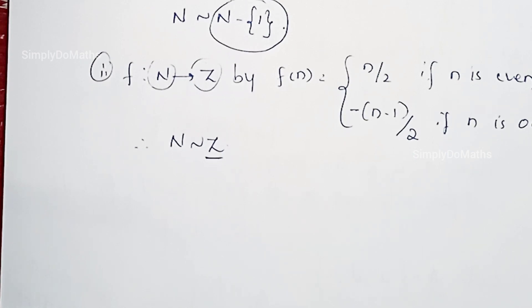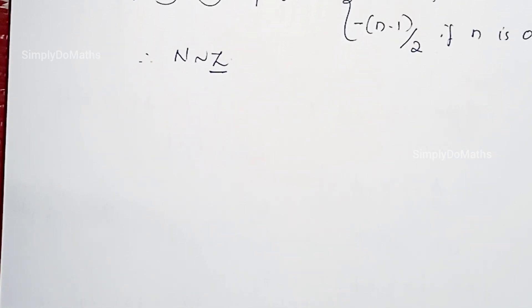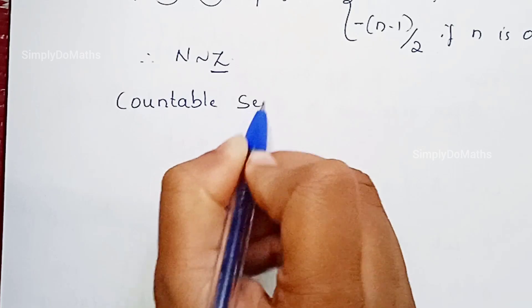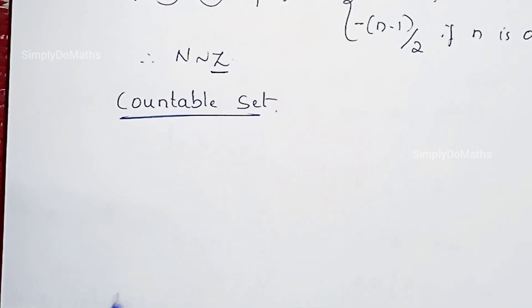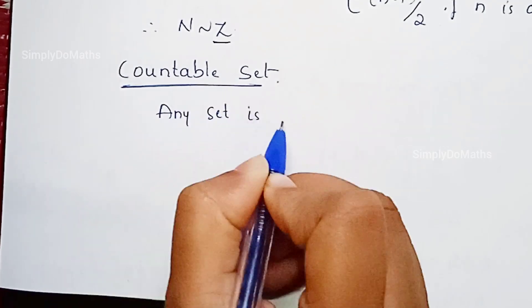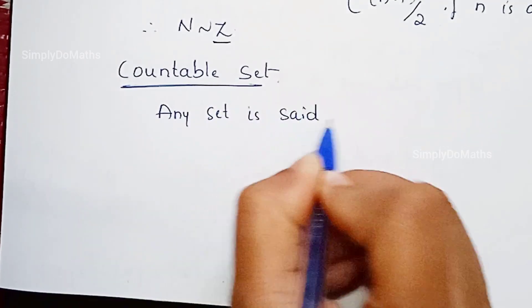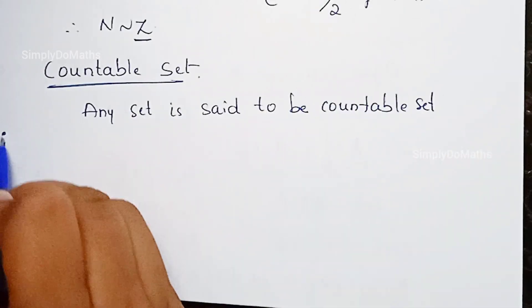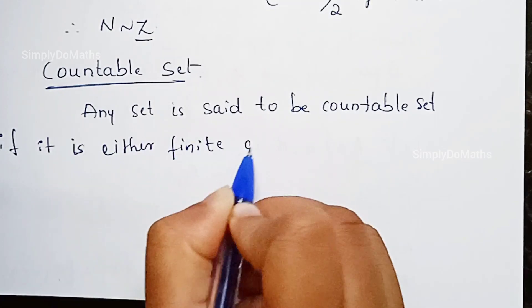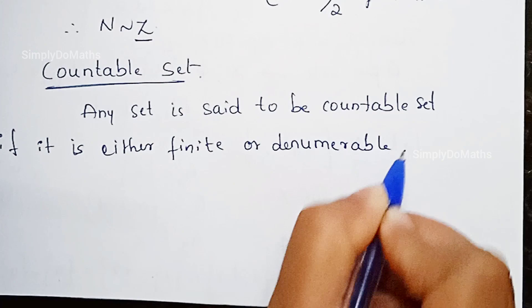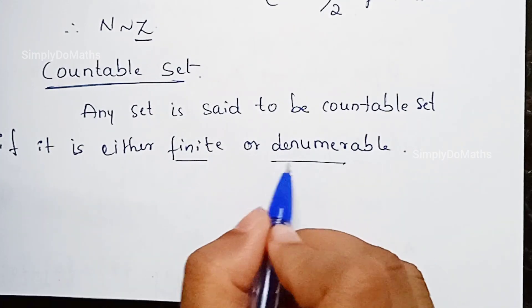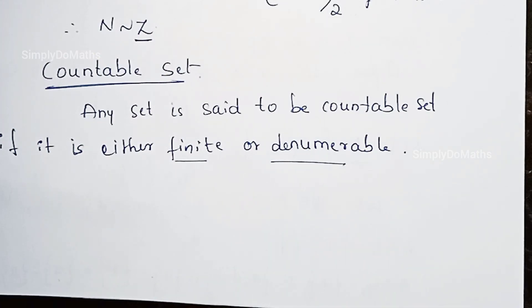Along with the concept of denumerable sets, we come to one more important topic: countable sets. A set is said to be a countable set if it is either finite or denumerable.